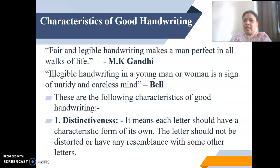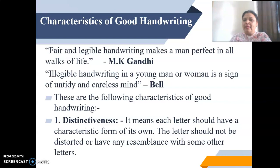What are the characteristics one should follow to improve their handwriting? The first characteristic is distinctiveness. It means each letter should have a characteristic form of its own. The letter should not be distorted or bear any resemblance to another letter — for example, writing O should not look like A, and writing A should not look like O. Every letter should have its own distinct characteristics.